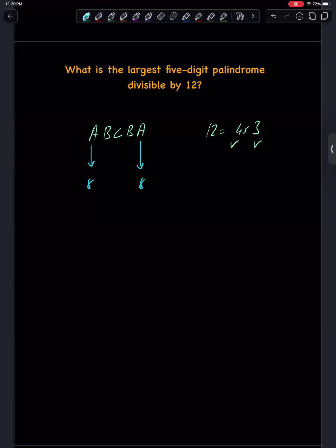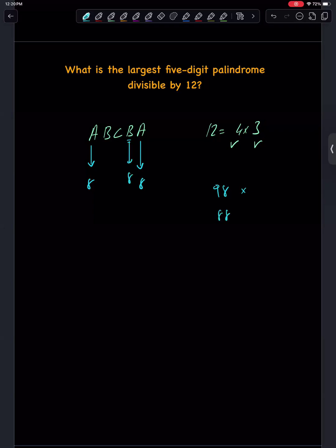Now, the rule for 4: the last two digits must be a multiple of 4. If we choose B is 9, 98 is not a multiple of 4, but 88 is, so we are choosing B is also 8.